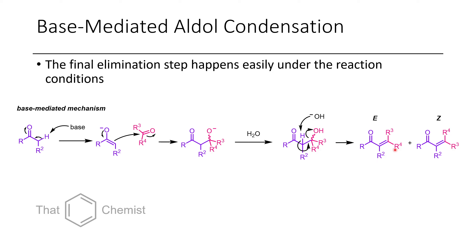This affords either the E or the Z product. Here it's still not clear whether this is E or Z because R3 and R4 aren't specified. But if we're assuming R4 is the larger group, this would be an E alkene, and if R3 was the smaller group, then this would be the Z alkene.